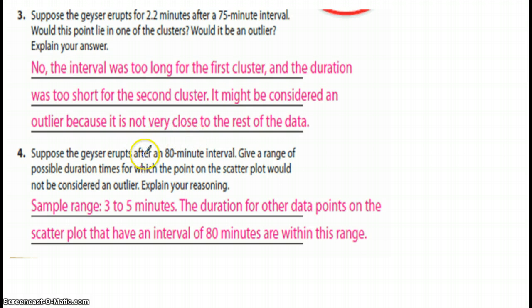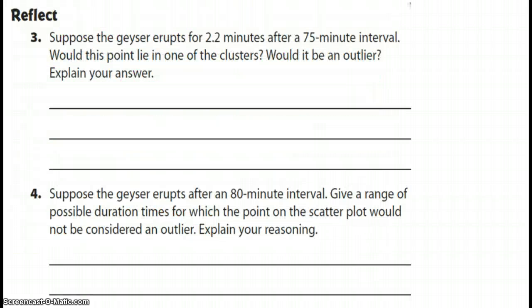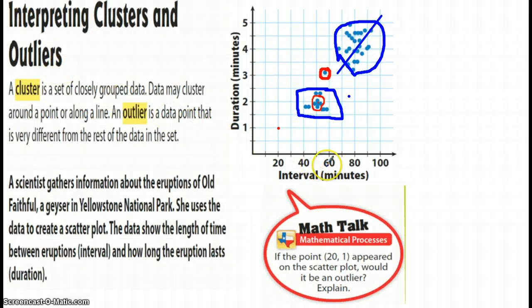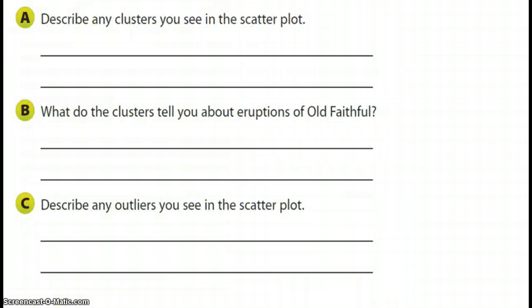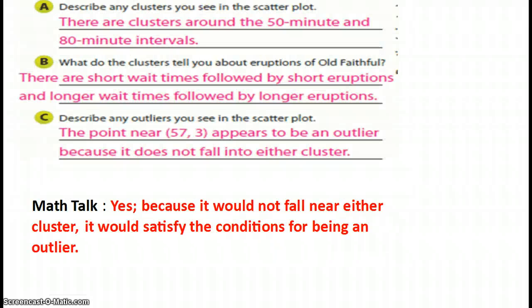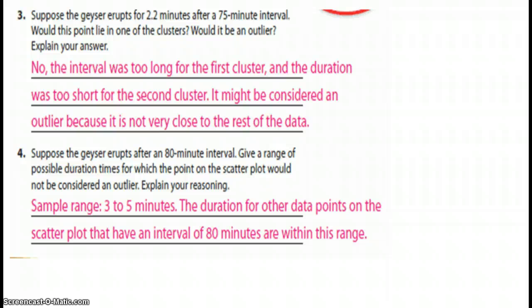And then number 4 says, suppose the geyser erupt for an 80 minute interval and give a range of possible duration times. So, again, the author says 3 to 5 minutes. So, let's go and look. See what we see. I think it's always best to go. So, we see 80, and then as we come up to 80, notice the first data point right here starting at 3, but the other data points up here ends at 5. So, yes, the author would be right. We're looking at data that's running from 3 to 5. So, I guess I would definitely say that his assessment here, his assessment would be correct.